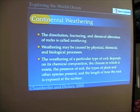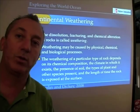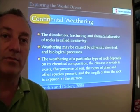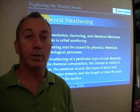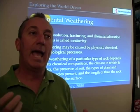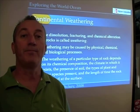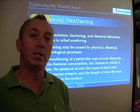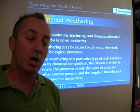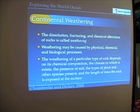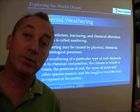The dissolution, fracturing, and chemical alteration of rocks is called weathering. You may have noticed weathering if you've gone into the mountains and had rock crumble in your hands. As it rains on rocks, it begins to dissolve them apart or dissolve certain elements, causing the rock to crumble. The weathering of a particular rock depends on its chemical composition, the climate, whether there's soil and plants present, and how long the rock is exposed at the surface. Weathering may be caused by physical, chemical, and biological processes.